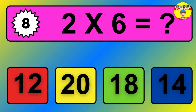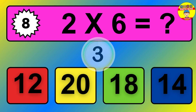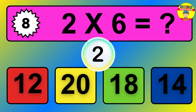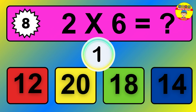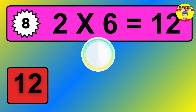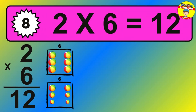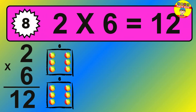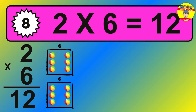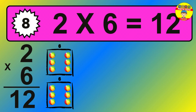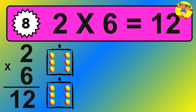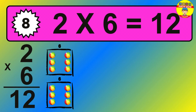Question 8. 2 times 6 equals what? The answer is 2 times 6 is 12. To calculate, we have 2 groups with 6 balls each one. So how many balls do we have? 12 balls.